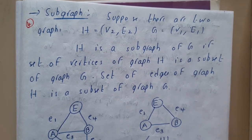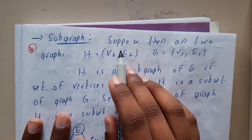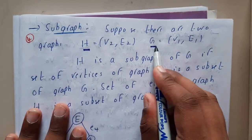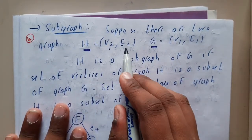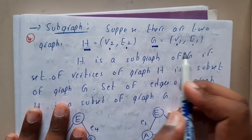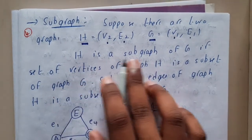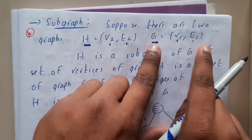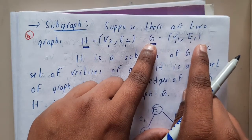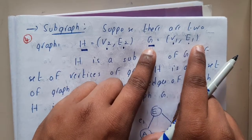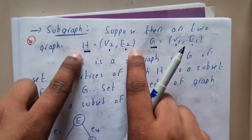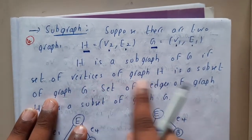In simple words, suppose there are two graphs, one is H and one is G, with vertices V2, E2 and V1, E1. H is a subgraph of G, so indirectly G is the parent graph or the big graph, and H is the children graph or the subgraph or the small graph.